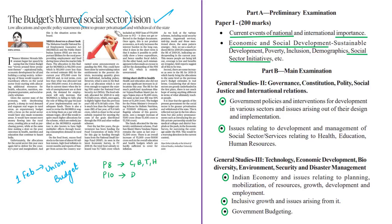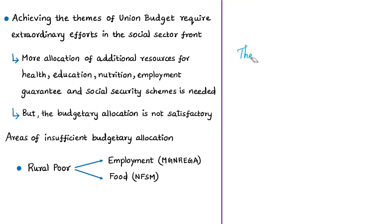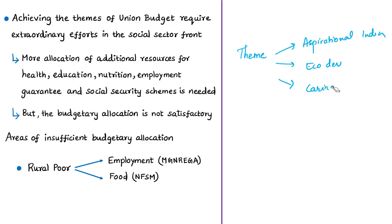To achieve these themes, extraordinary efforts in the social sector are required. The author argues there is a need for additional resources for health, education, nutrition, employment guarantee, and social security schemes. However, the budgetary allocation for many social sector schemes is not satisfactory. The author discusses two important lifeline schemes for the rural poor — one providing employment and one providing food — because economic growth is decelerating, rural demand is low, and real wages are stagnant.